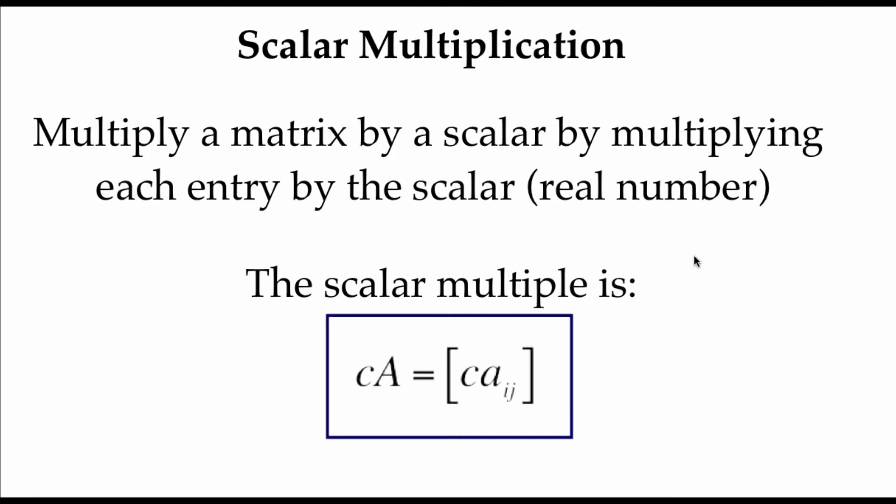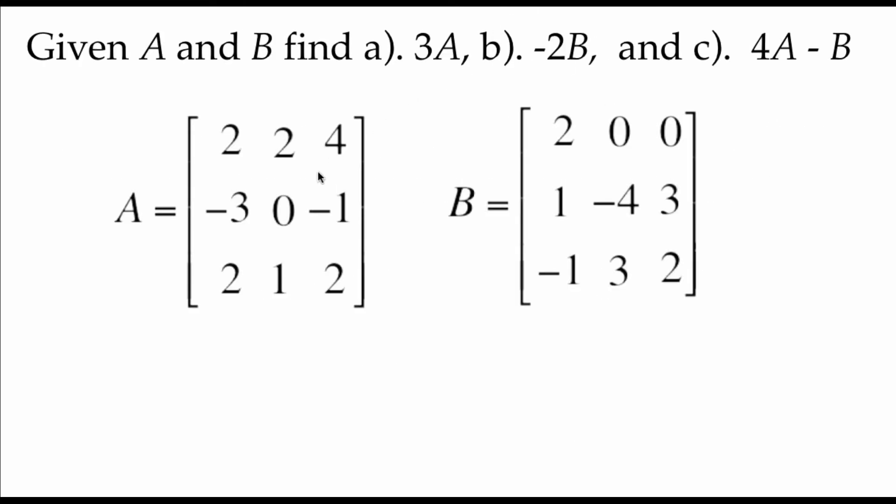Next thing we're looking at is scalar multiplication with matrices. So you might remember scalars from when we dealt with vectors. A scalar is just a number. So we're taking a matrix times a number. And the way we're going to do that is by multiplying every single entry inside of our matrix by whatever that scalar number is. Here we've got two matrices, matrix A and matrix B. We're going to do a few different operations with those.